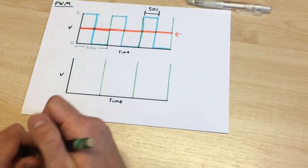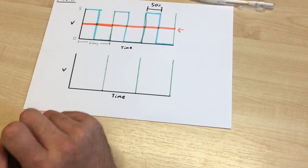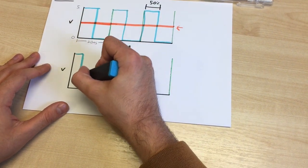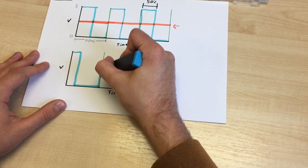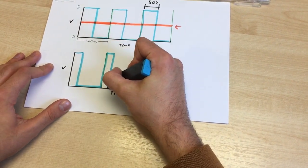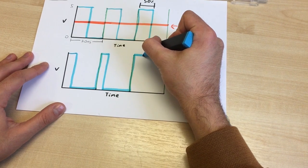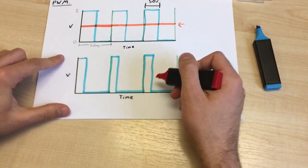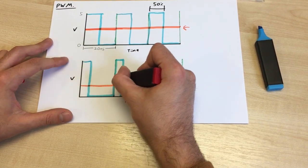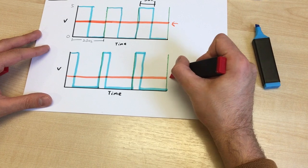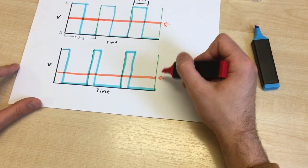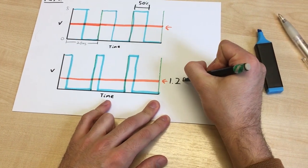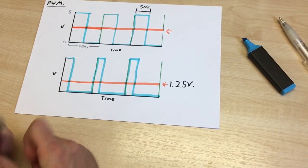So, if on the bottom graph, we're going to draw another one, and we're going to have a duty cycle of 25%, which means the wave is only on for about 25% of the time. Like that. And as a result, the voltage level is only going to be 25% of the voltage max. So, we're going to get a voltage out that's 25% of 5 volts, which is 1.25 volts. And that is how analog write works.